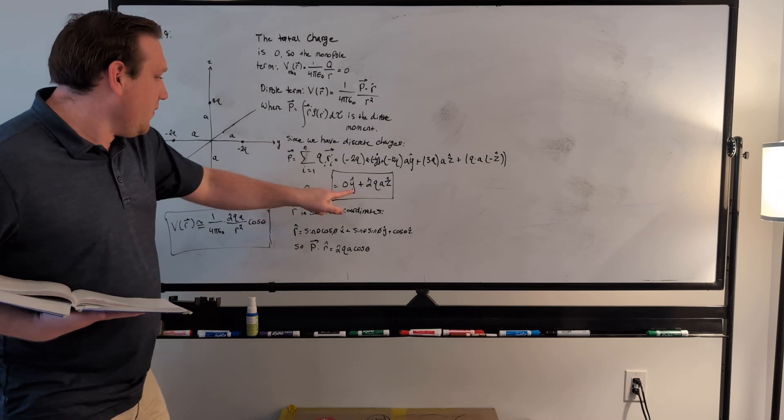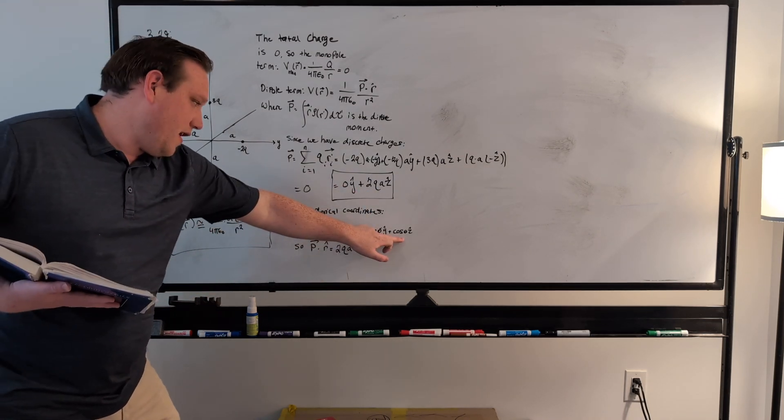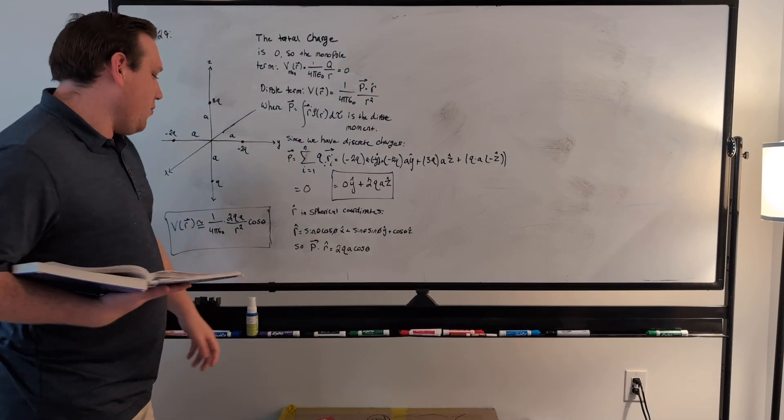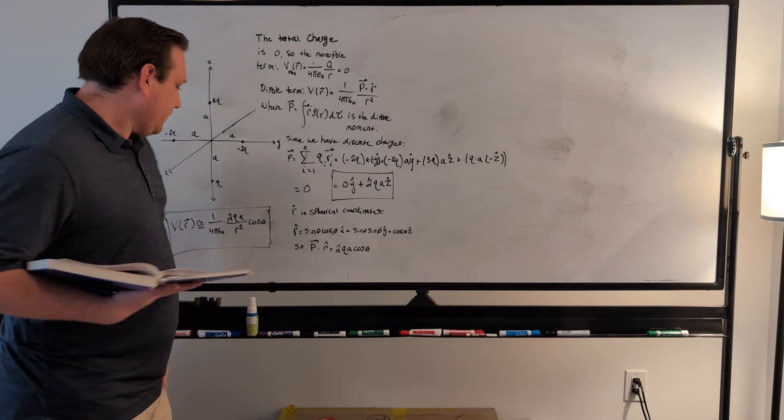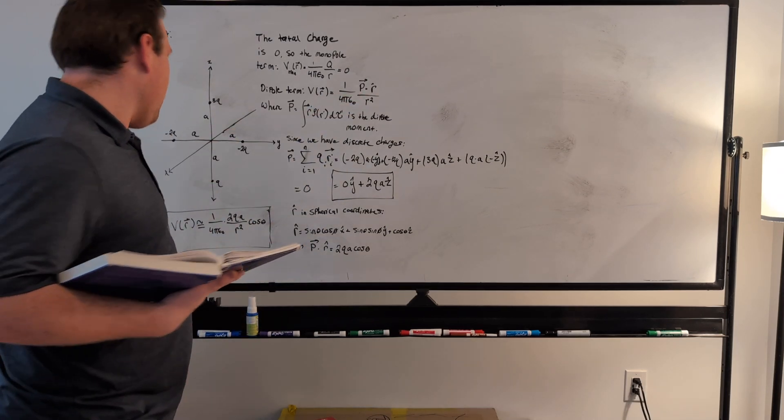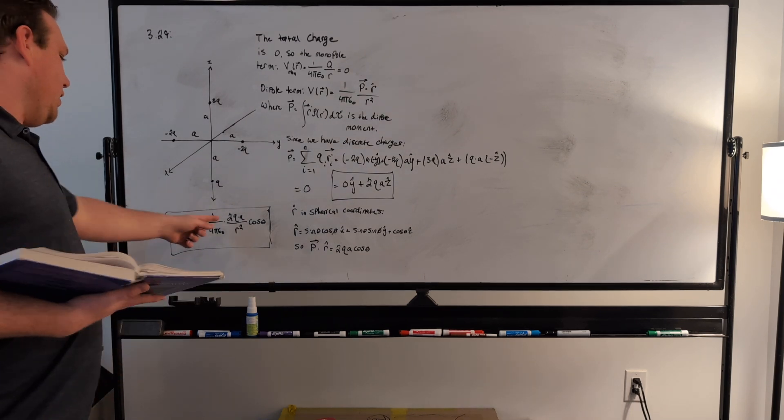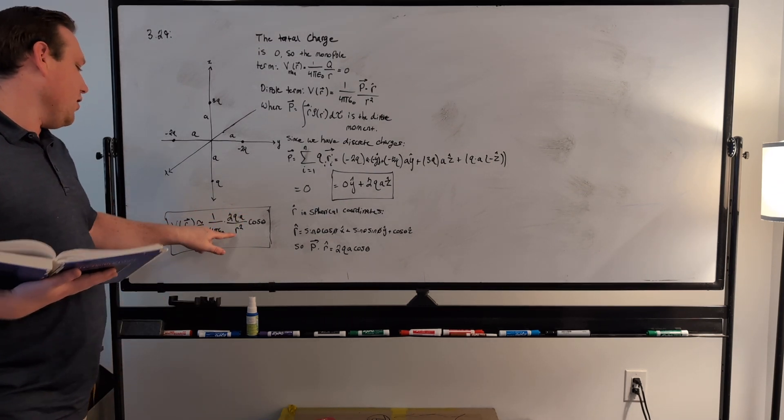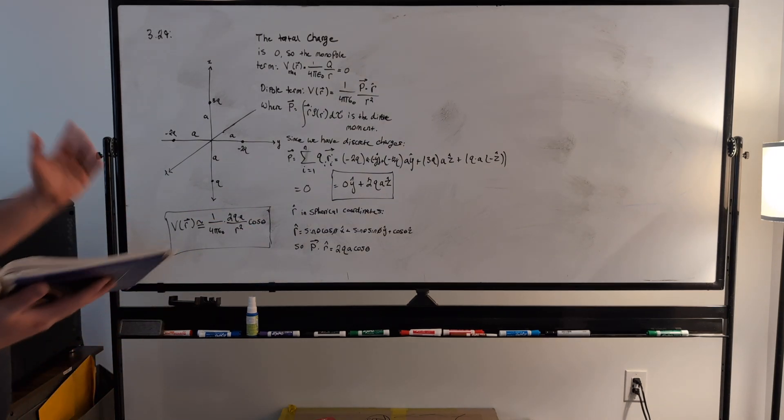So effectively what we get is 2q a and then cosine of theta, which comes from the dot product. So this is our p-dot r-hat, and we just plug that into our formula up here, and we're left with a simple equation that the approximate potential far away is 1 over 4 pi epsilon naught times 2 times q times a over r-squared times the cosine of theta, and that's it.